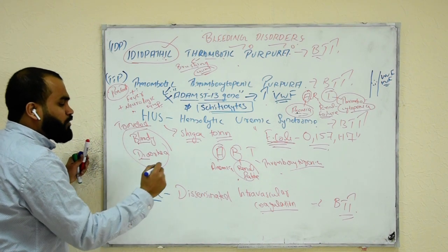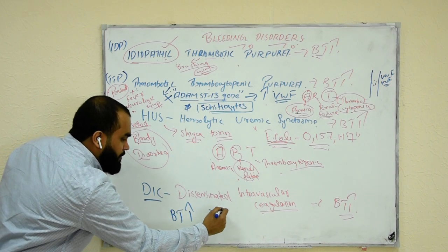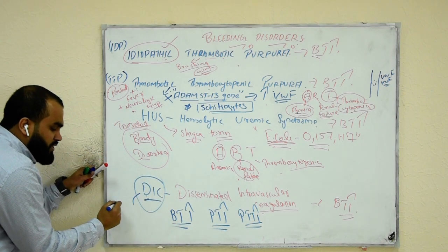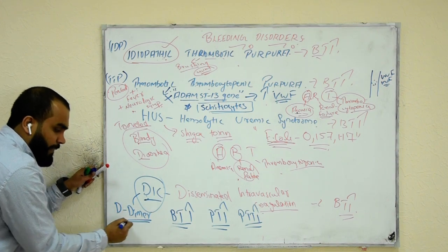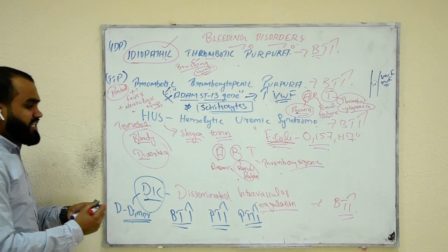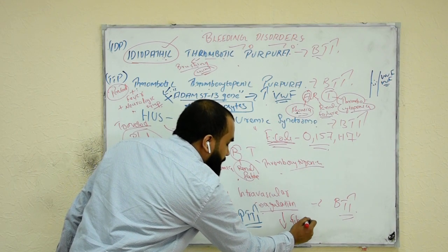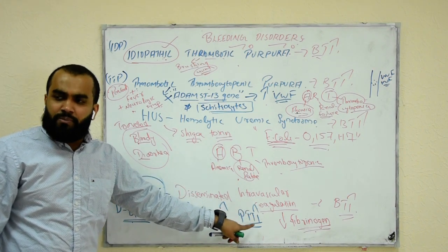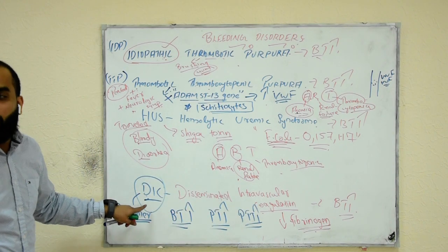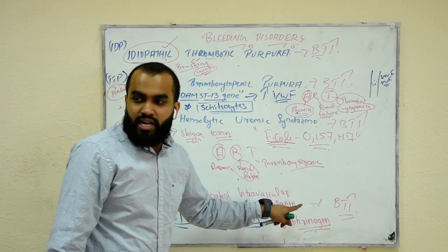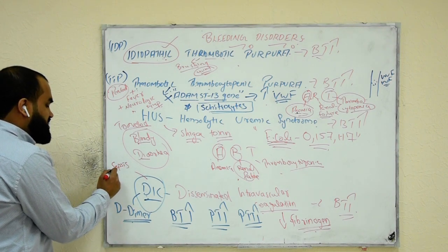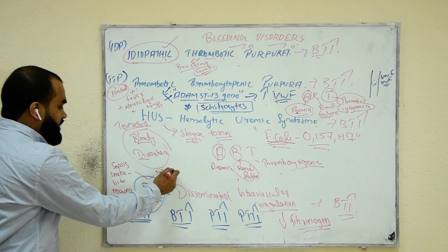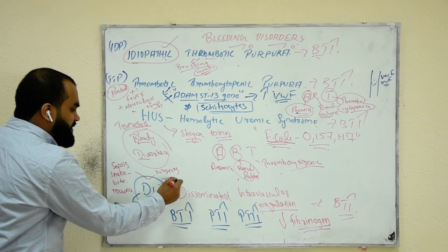The last one is DIC. In any question where you see everything increased — bleeding time increased, prothrombin time increased, partial thromboplastin time increased — they are talking about DIC. There is one more specific indicator: D-dimer will be seen in the blood. Also, in DIC, fibrinogen will be decreased. Remember: DIC always comes with sepsis, snake bite, trauma, surgery, or pregnancy — these are the precipitating factors for DIC.